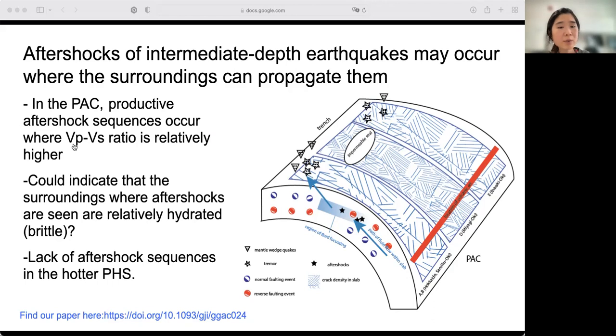As the behavior of the productive aftershock sequences closely resembles that of shallow aftershock sequences, we surmise that the environment may be relatively brittle, indirectly supporting a dehydration hypothesis for intermediate-depth main shocks in the Pacific plate. On the other hand, the lack of aftershocks in the Philippine Sea plate could be indicative of a more viscous regime.